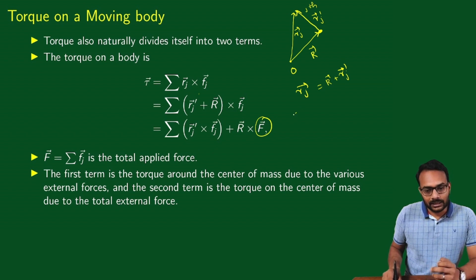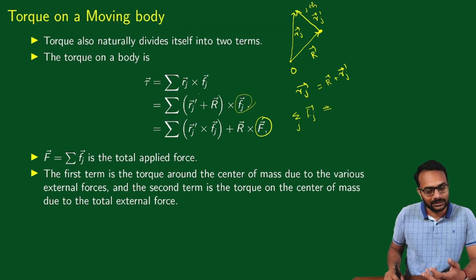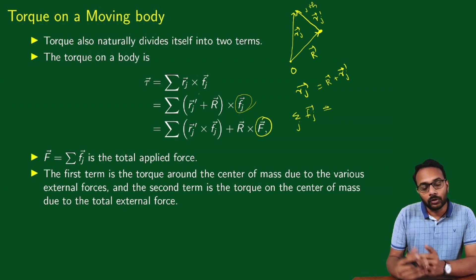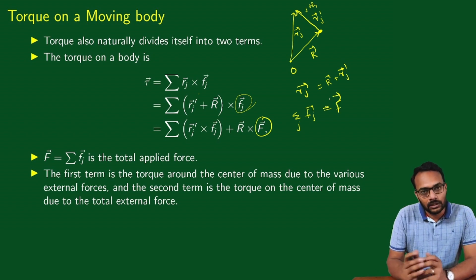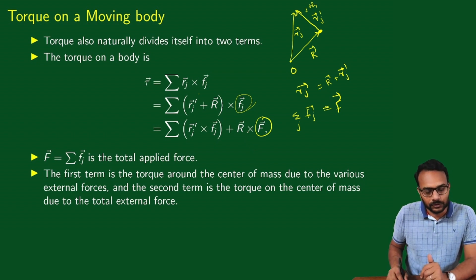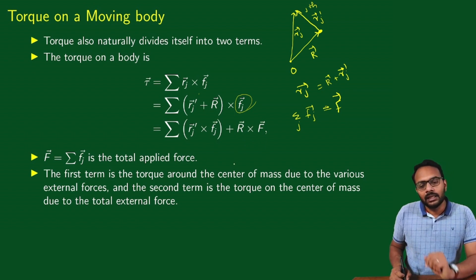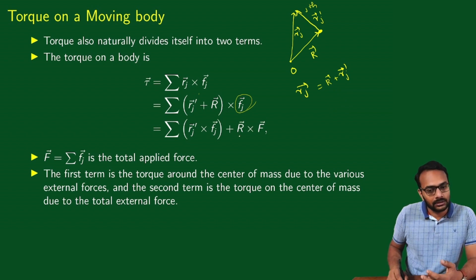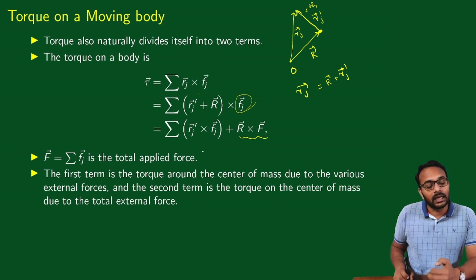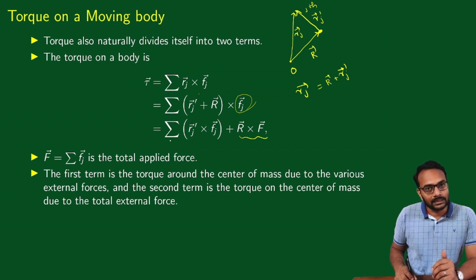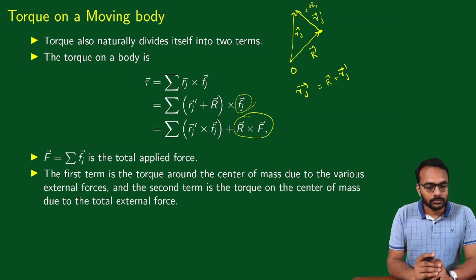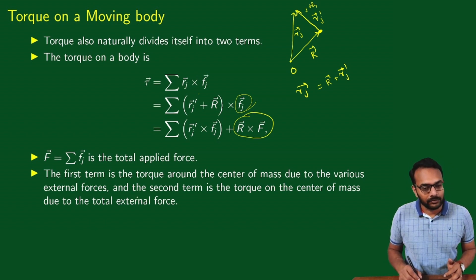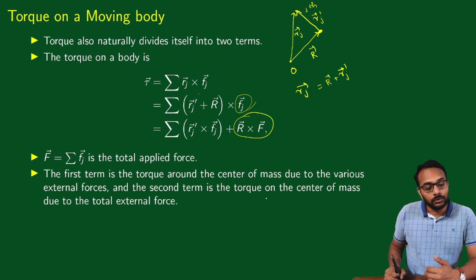Summing over all particles, the second term has the sum of all forces, which is the total external force F acting on the object. So the total torque separates into two terms: the first term is the torque around the center of mass due to the various external forces, and the second term is the torque on the center of mass due to the total external force — R-vector cross F-vector.